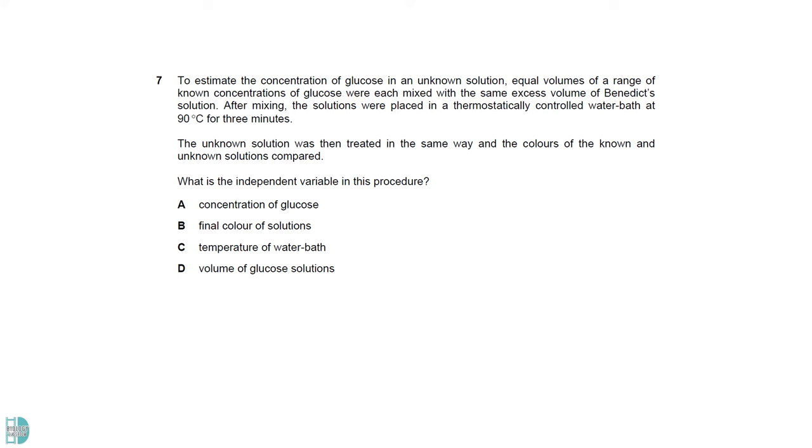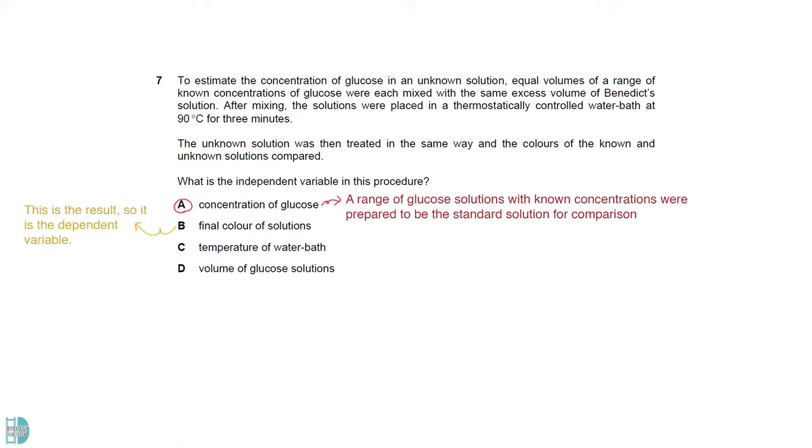A range of glucose solutions with known concentrations were prepared to be the standard solution for comparison. So the concentration of glucose is the independent variable. The final color of the solution is the result. It is the dependent variable. The temperature of the water bath and the volume of glucose solutions were kept constant throughout the experiment. They are both the control variables.